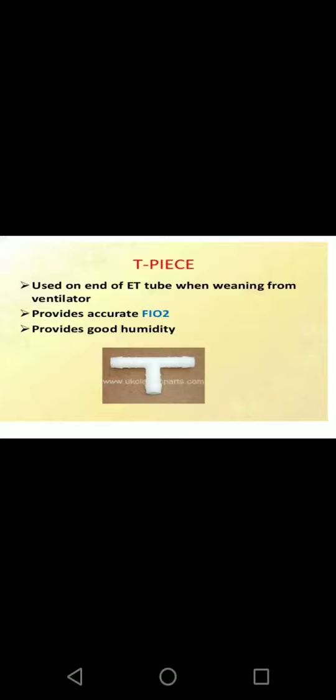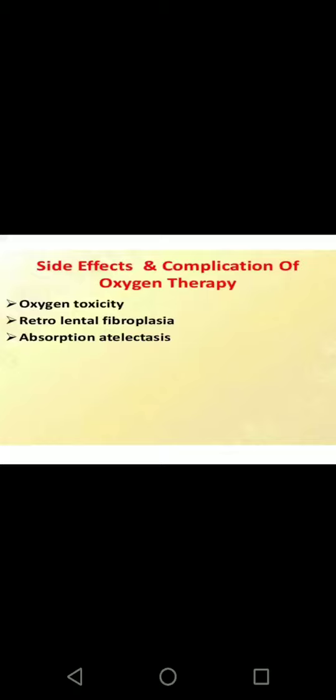The T-piece is used on the end of an ET tube when weaning a patient from the ventilator. It provides accurate FiO2 and good humidity.